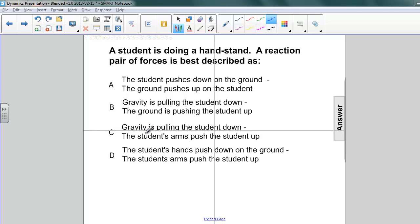C. Gravity is pulling the student down. The student's arms push the student up. D. The student's hands push down on the ground, and the student's arms push the student up.